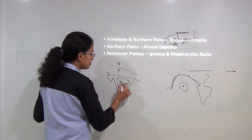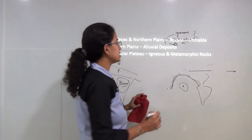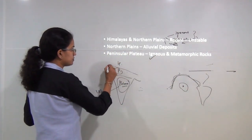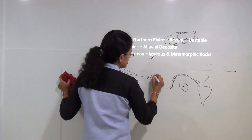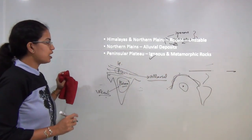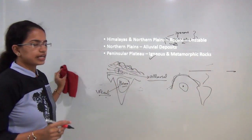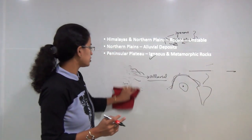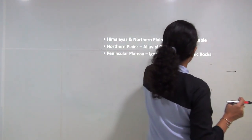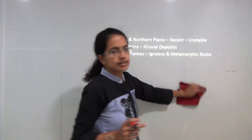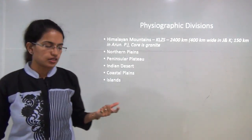The plateau is a result of volcanic eruptions from years back, making this region rich in igneous and metamorphic rock. The plain areas are well drained by numerous rivers, resulting in alluvial deposits. The northern Himalayan region is more recent in origin and geologically unstable because it is still evolving. So the northern Himalayan region is relatively unstable.